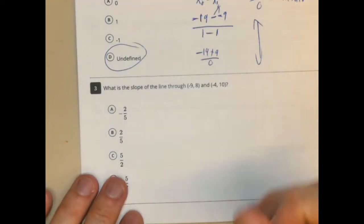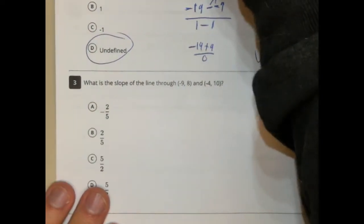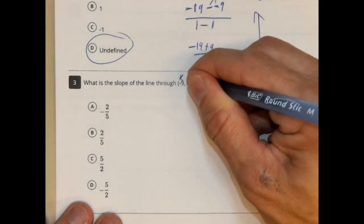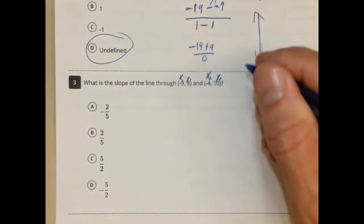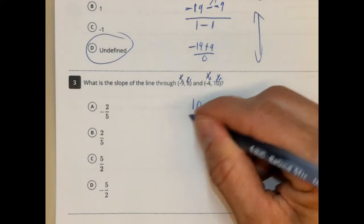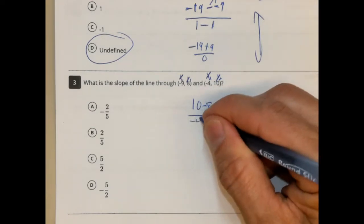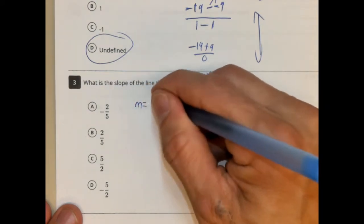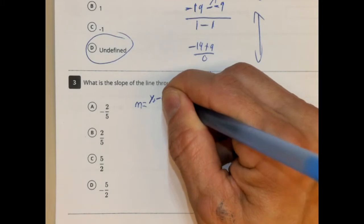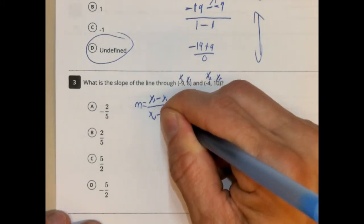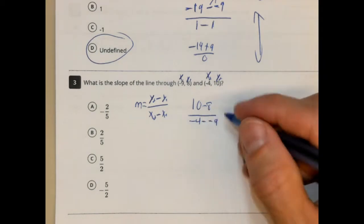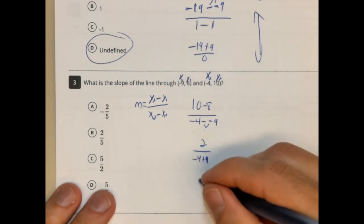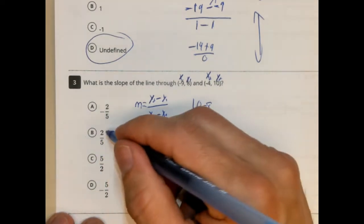Number 3 — I apologize ahead of time, there are a few typos on this thing. Again, find the slope: x1, y1, and x2, y2. So 10 take away 8, and negative 4 take away negative 9. M equals y-sub-2 minus y-sub-1 over x-sub-2 minus x-sub-1. So 10 take away 8 is 2. Negative 4 plus 9 is 5. So 2 fifths. There we go.